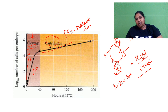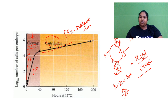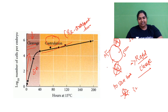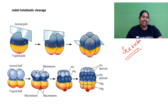Because your cell will be dividing from 1 to 2, 2 to 4, 4 to 8, 8 to 16, 16 to 32 — it has to complete everything within a short time. If it undergoes all four phases it will take a lot of time. That is the reason why it skips them and shuttles between S phase and M phase. So in sea urchin development, they are undergoing radial holoblastic cleavage.